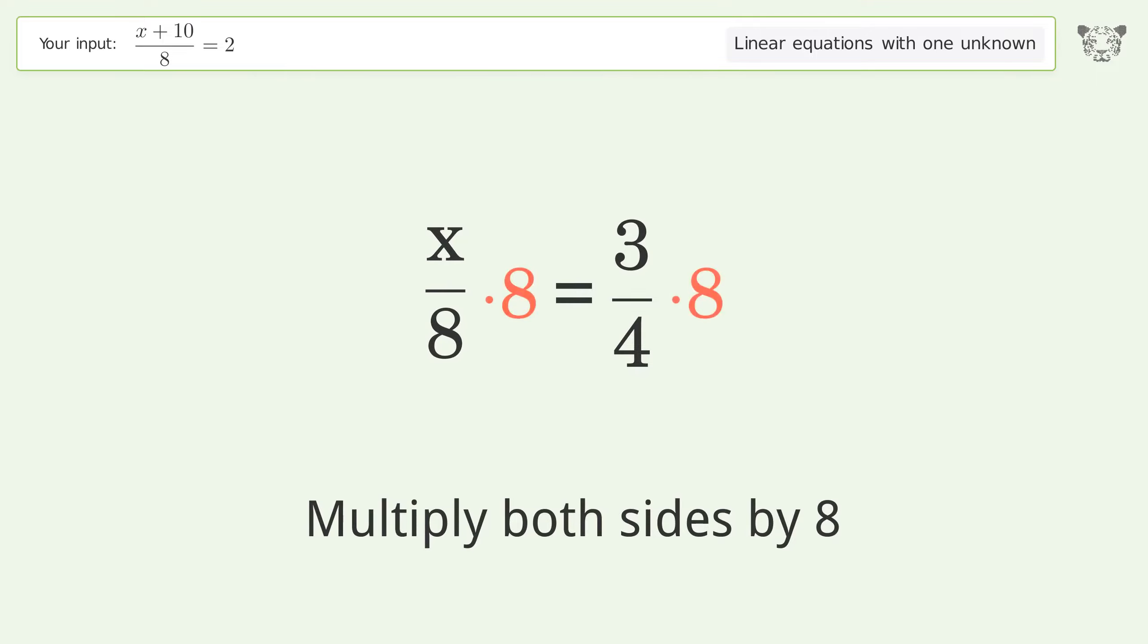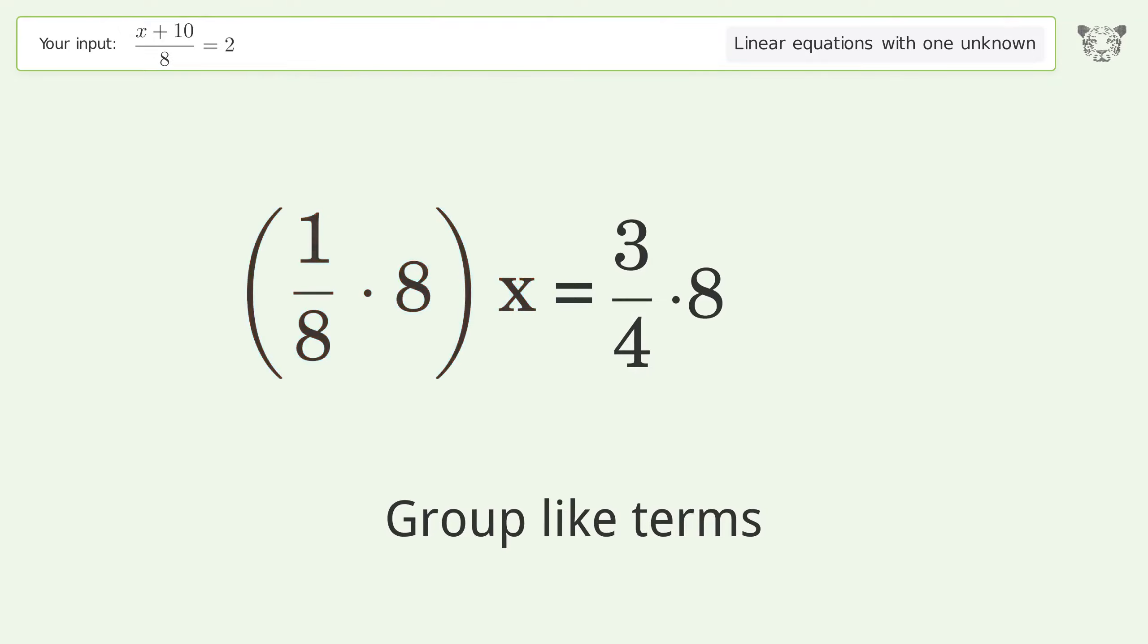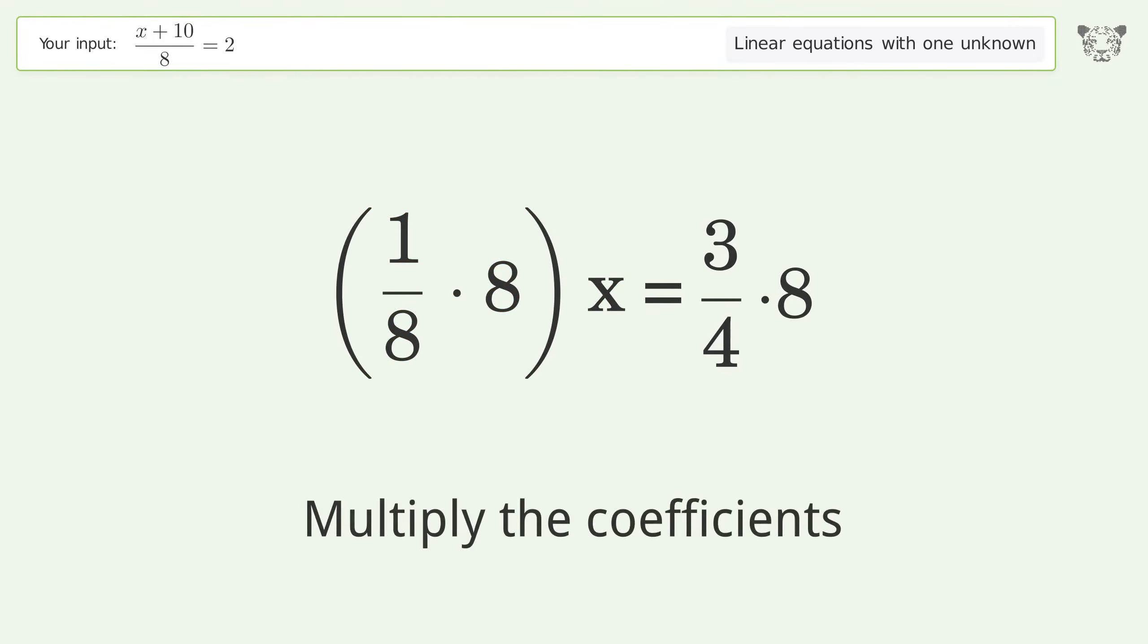Isolate the x by multiplying both sides by 8. Group like terms.